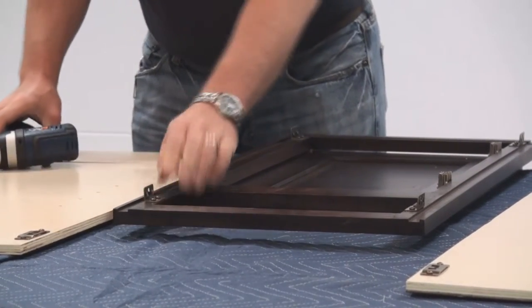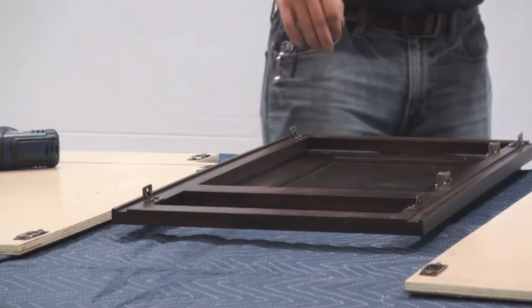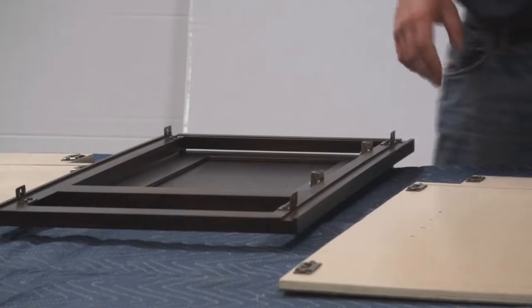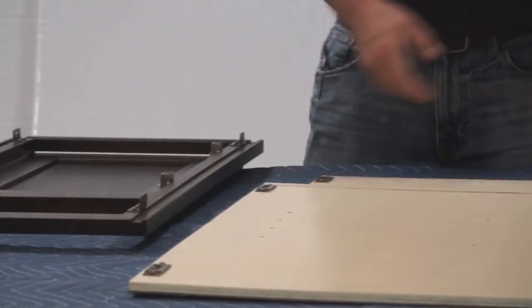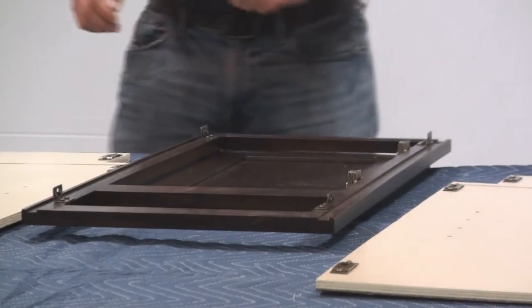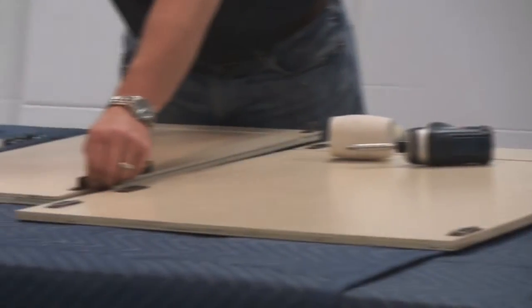Now, for video purposes, I went ahead and installed all the male clips except for that one. You have two on your toe kick, you have four on the face frame of your cabinet, and you have six on the back of your cabinet.